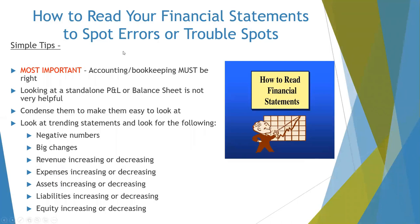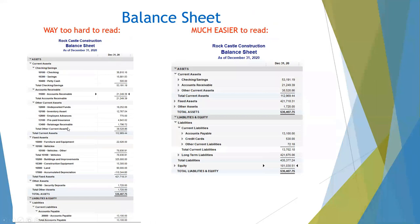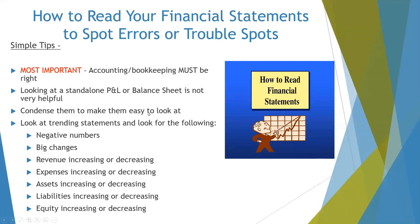Now we want to dive into how to read your financial statements to spot errors or trouble spots. The most important thing is to make sure that your accounting and bookkeeping is correct, because if it's not, there are going to be a lot of errors and a lot of trouble spots. When you look at a stand-alone profit and loss or balance sheet for just one time period, it's not going to tell you a whole lot. You want to condense and collapse them to make them easy to look at.